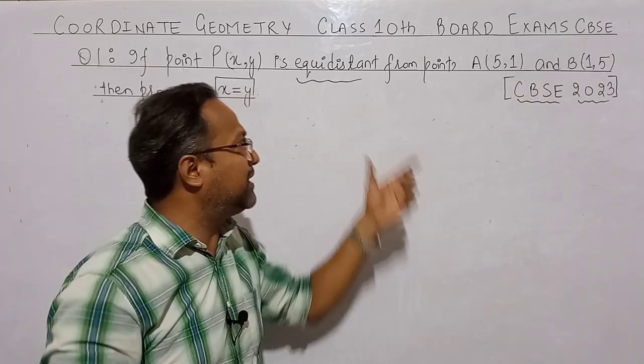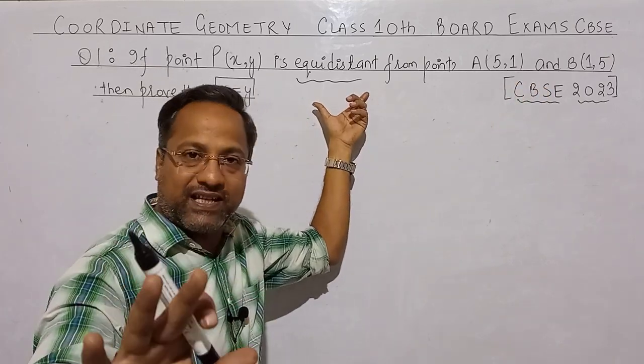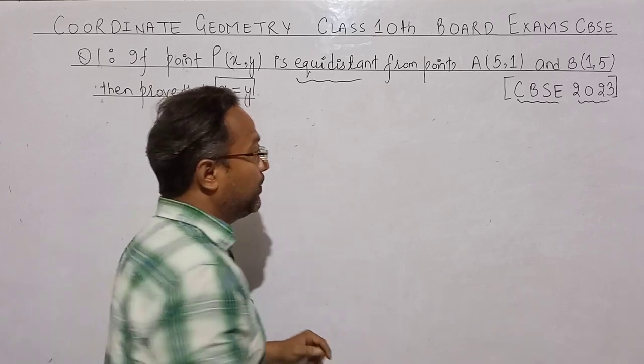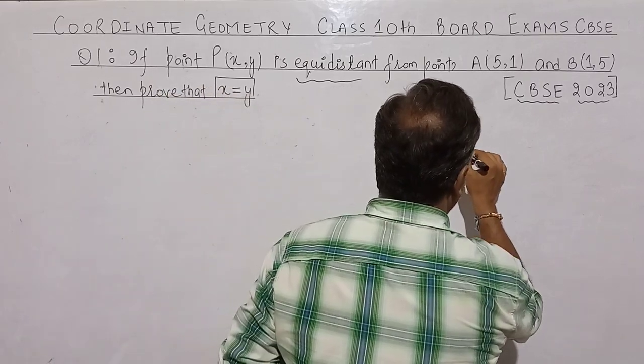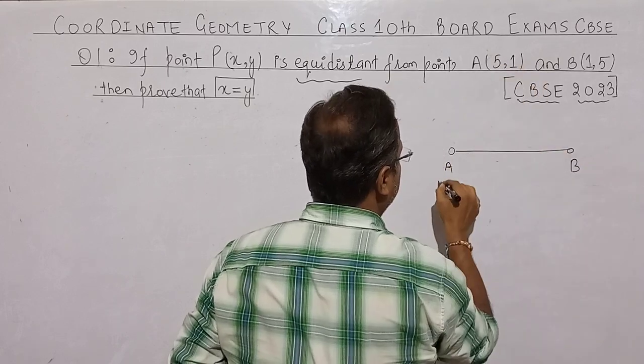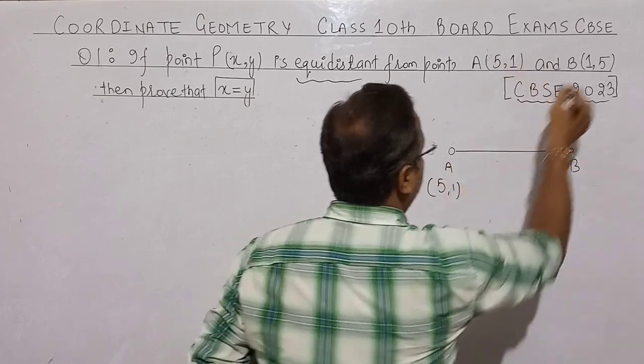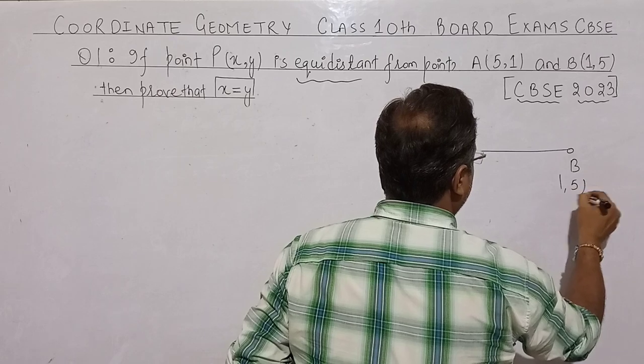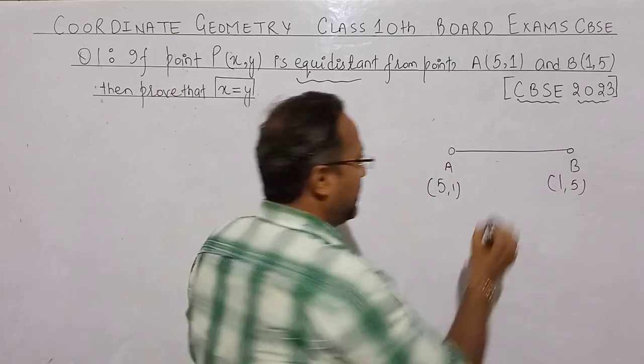Equidistance means equal distances. Let's look at it. First let's make a figure. We will have a point A and one point B, and these two points we have given as (5,1) and B point as (1,5). In the middle we will have a point P.